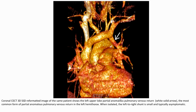Coronal contrast-enhanced CT reformatted image of the patient shows the left upper lobe pulmonary vein, widely patent, representing the most common form of partial anomalous pulmonary venous return in the left hemithorax. When isolated, the left-to-right shunt is small and the patient is typically asymptomatic.